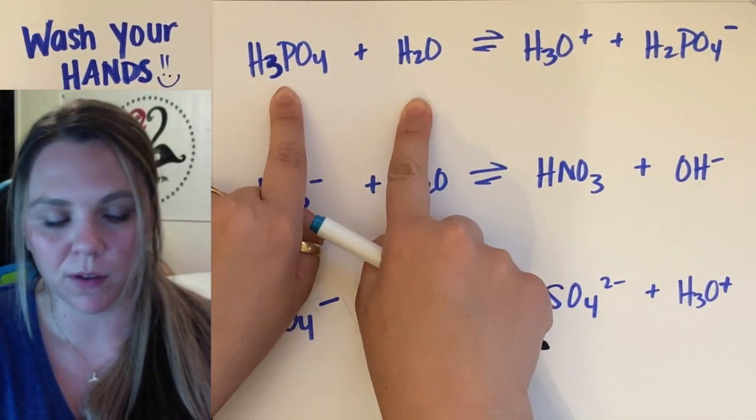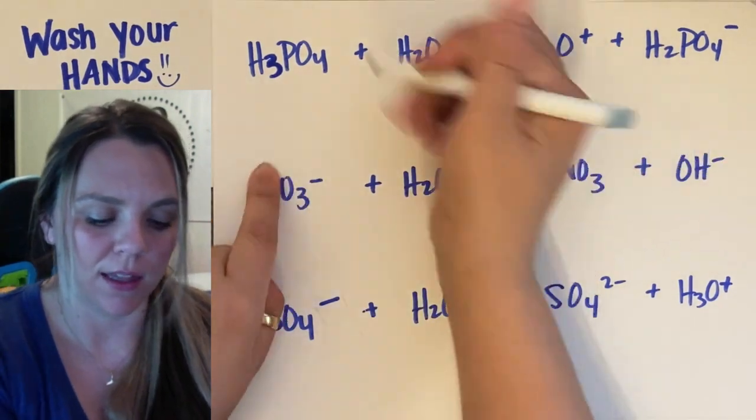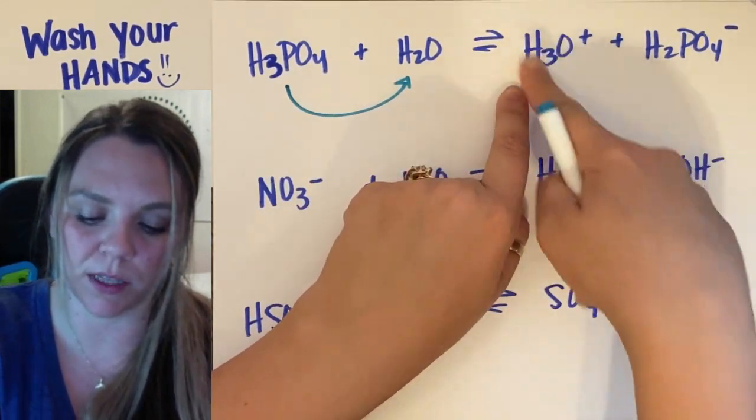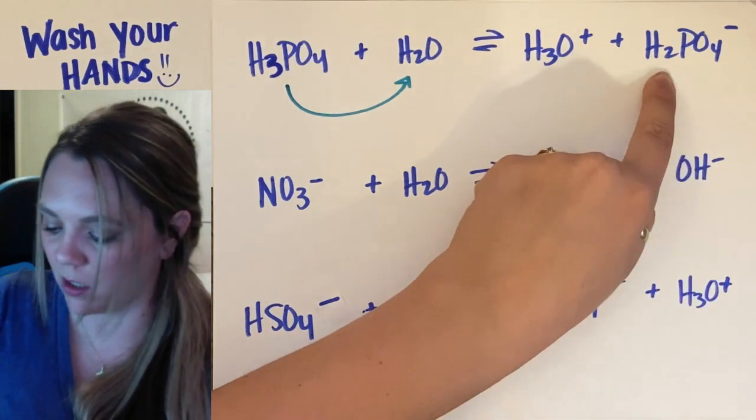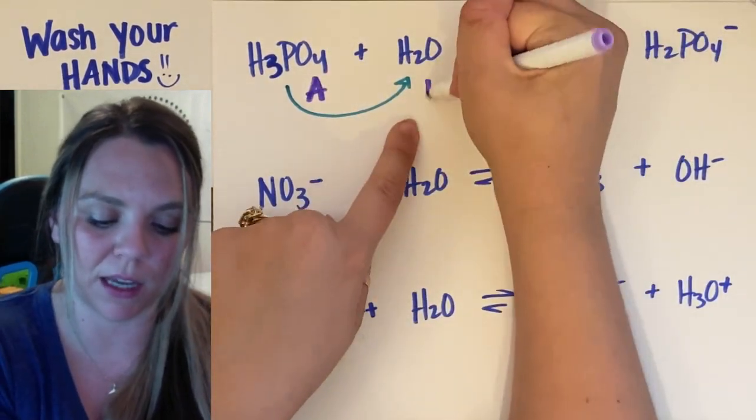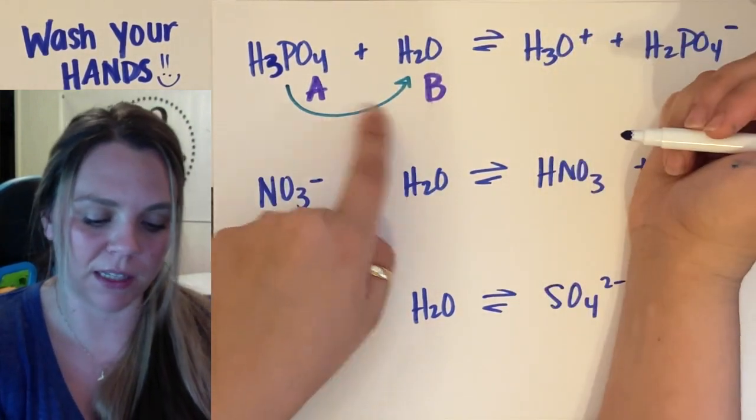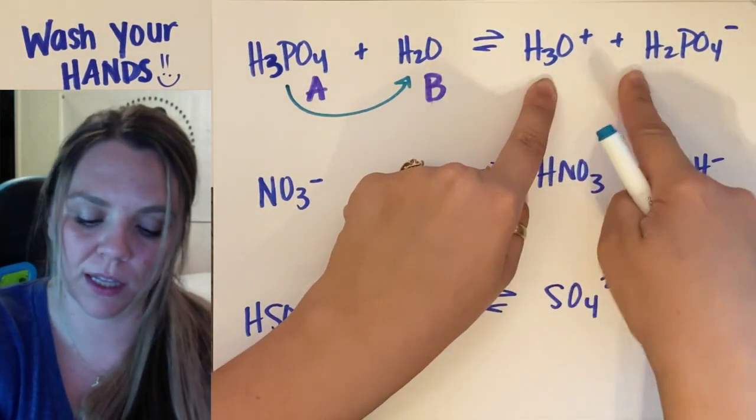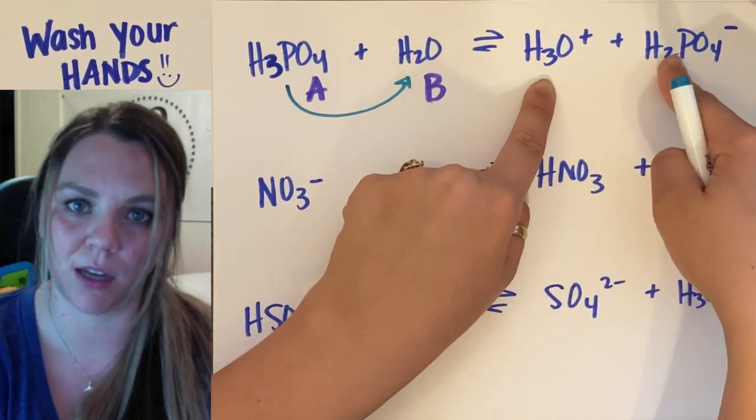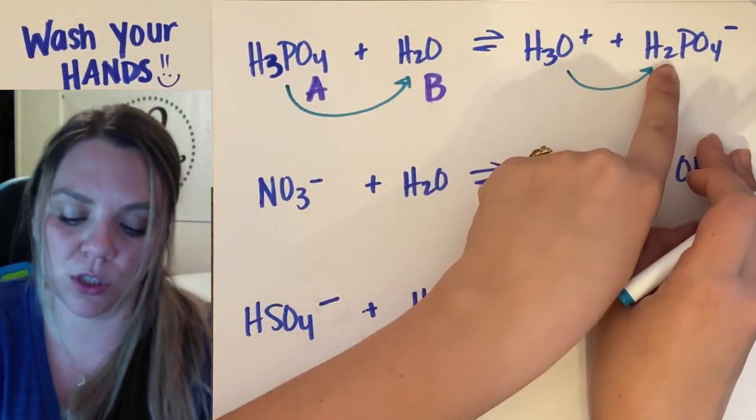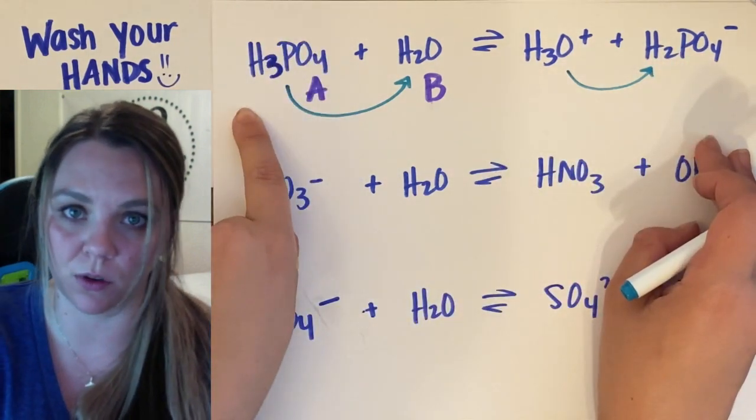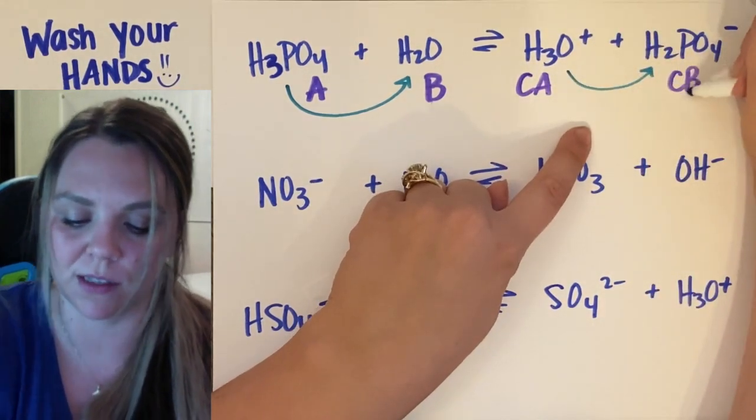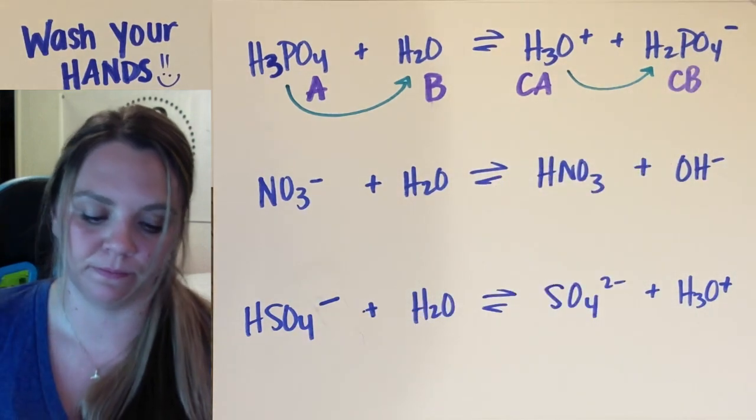First example. H3PO4, phosphoric acid, plus water. This guy is going to donate the hydrogen to water to make H3O+ and H2PO4-. So that means he is the acid. He is the base. Water is the base in this case. And moving backwards, H3O+, my hydronium, is going to donate that hydrogen back. So that H2PO4- turns back to H3PO4. So in this case, he is going to be my conjugate acid. This will be my conjugate base. He accepts a proton here.